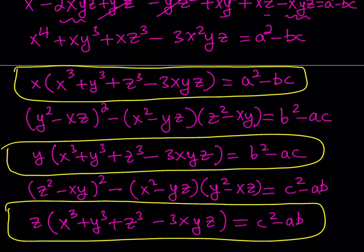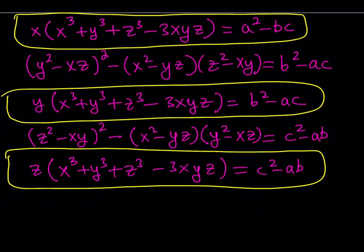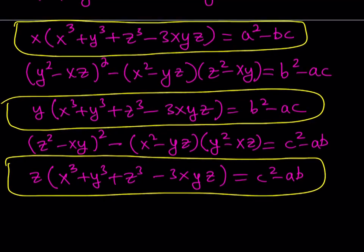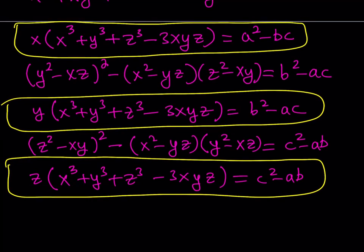What we got is remarkable: we have X times something, Y times the same thing, and Z times the same thing. The right-hand side is a constant because A, B, C are given numbers — they could be 1, 3, 10, even 0. That's why we're solving this in the general case. There are many ways to proceed, but what I'd like to do is call the expression inside the parentheses something.